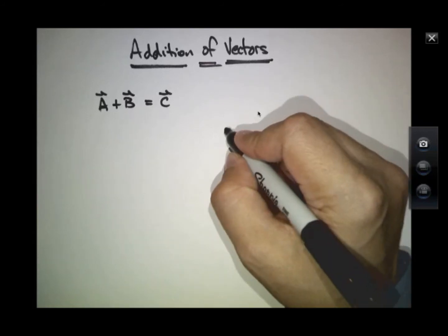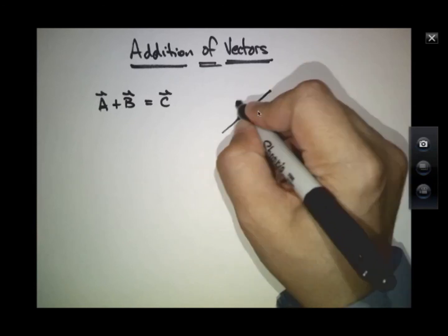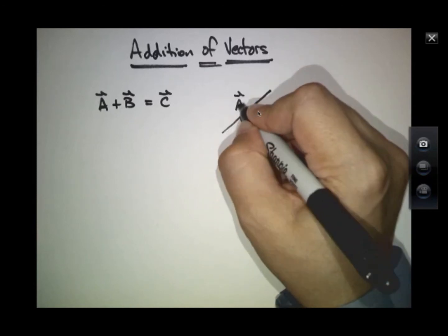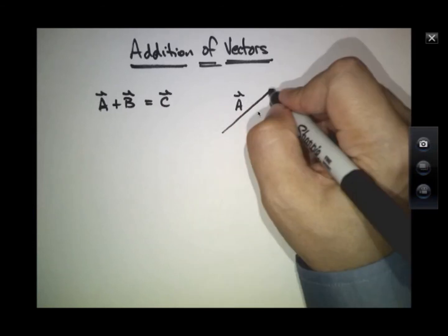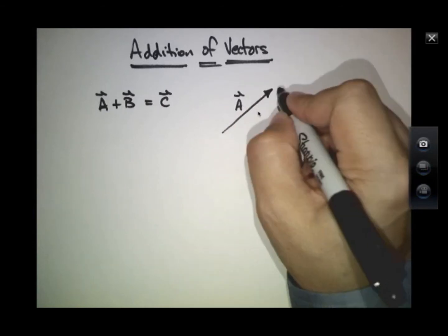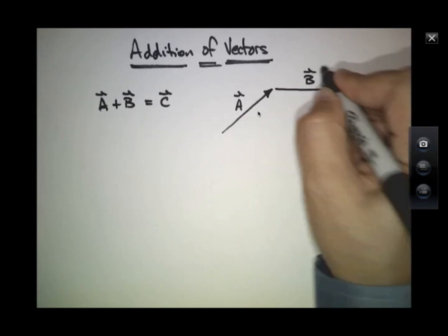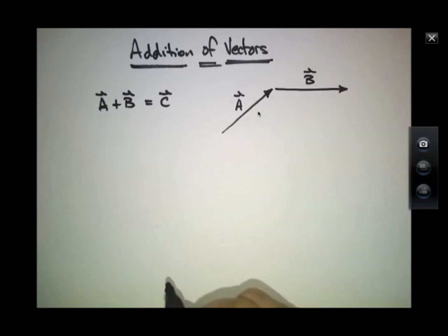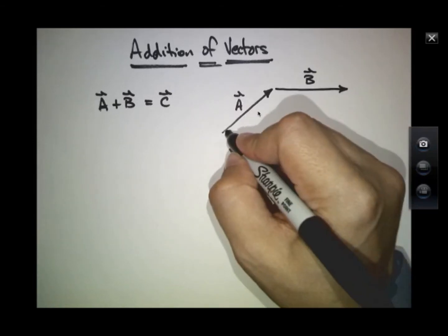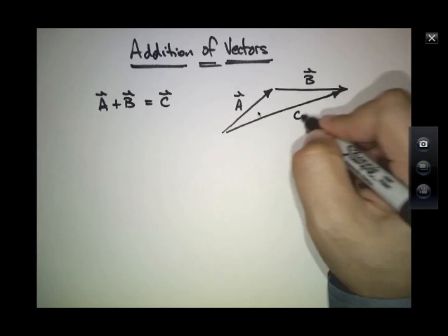We're going to mean now by addition the succession of two operations where I first travel in a direction given by A and then from there go in a direction by B and say what is that equivalent to? This is a vector, C.